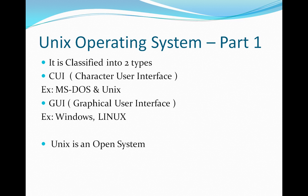The two types are: CUI, known as Character User Interface — examples include MS-DOS and UNIX — and GUI, the Graphical User Interface, examples being Windows and UNIX. UNIX supports both interfaces.